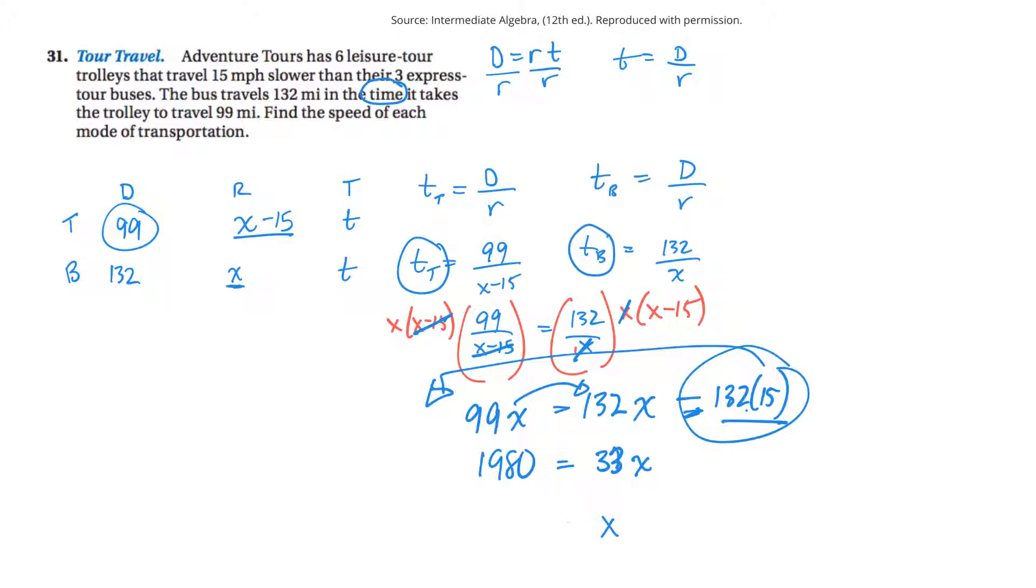So x is 60. So what is x? x is the speed that the bus is going. So if the bus is going 60, then the trolley's got to go 15 slower than that. So the trolley would be going 45.